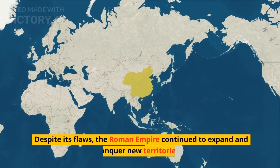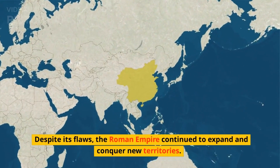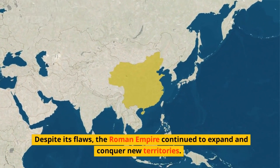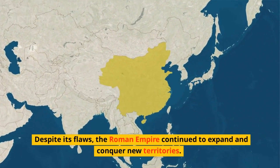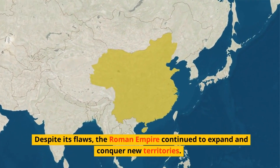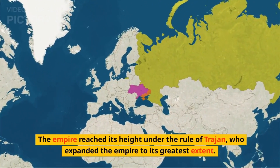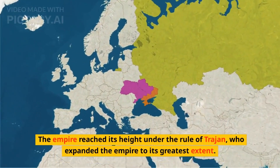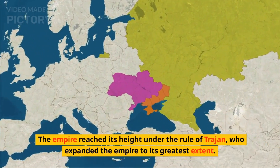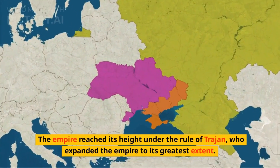Despite its flaws, the Roman Empire continued to expand and conquer new territories. The empire reached its height under the rule of Trajan, who expanded the empire to its greatest extent.